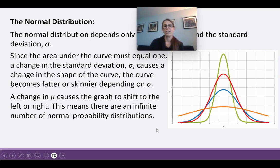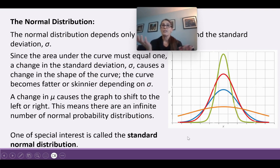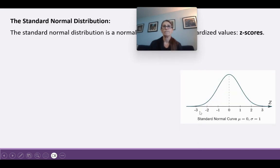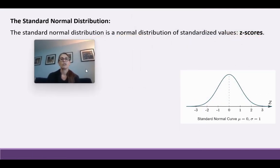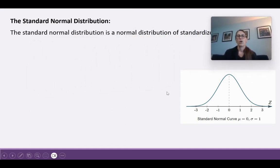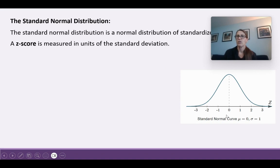There are an infinite number of normal probability distributions — you can see different versions with the same mean but different widths and heights. Because there are so many possibilities, one we use a lot is the standard normal distribution, which is a normal distribution of standardized values called z-scores. A z-score is measured in units of the standard deviation. The standard normal curve has a mean of zero with each standard deviation marked.